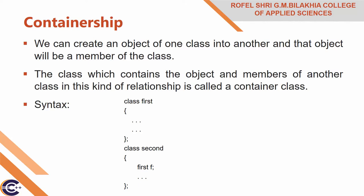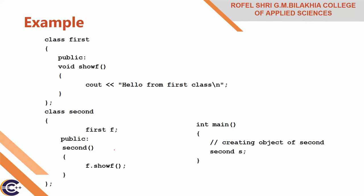The class which contains the object is called the container class. Now let me explain the syntax. First, I will create class 'First' and write some code. Then I will create another class 'Second'. In the second class, if we create an object of the first class, this type of relationship is called containership. In class 'First', write a public member function 'showF' which prints 'Hello from First Class'. Then create class 'Second', create an object of 'First' class inside it.